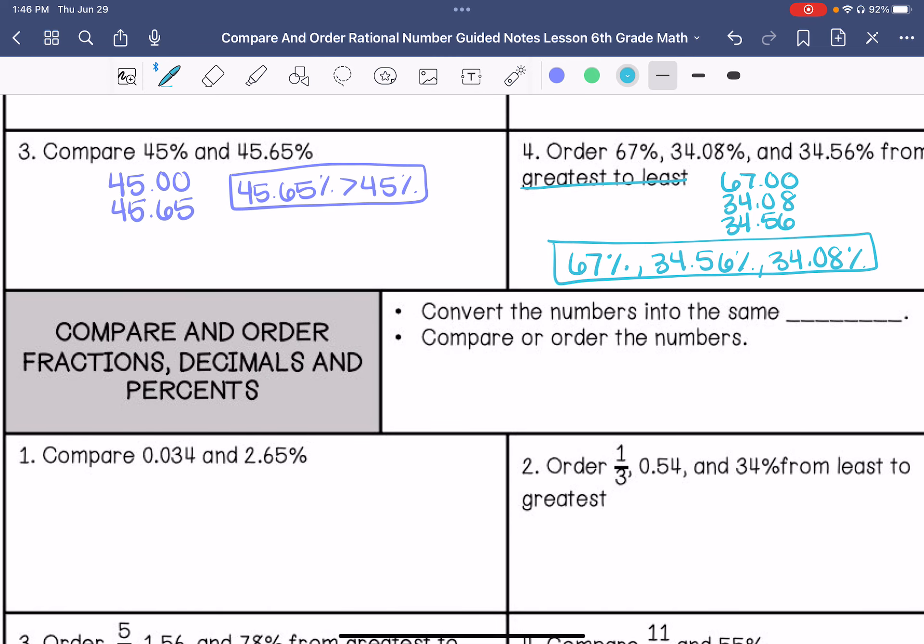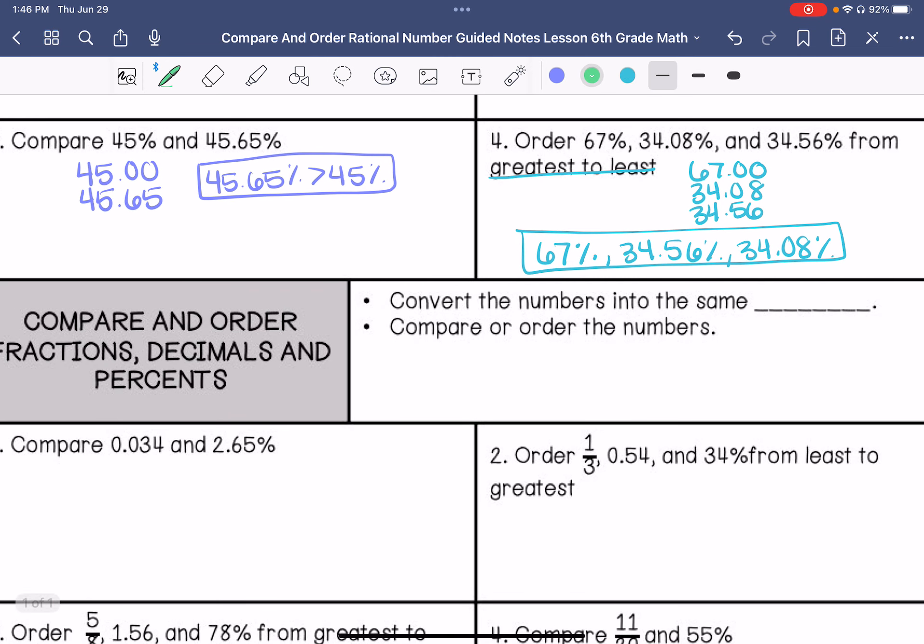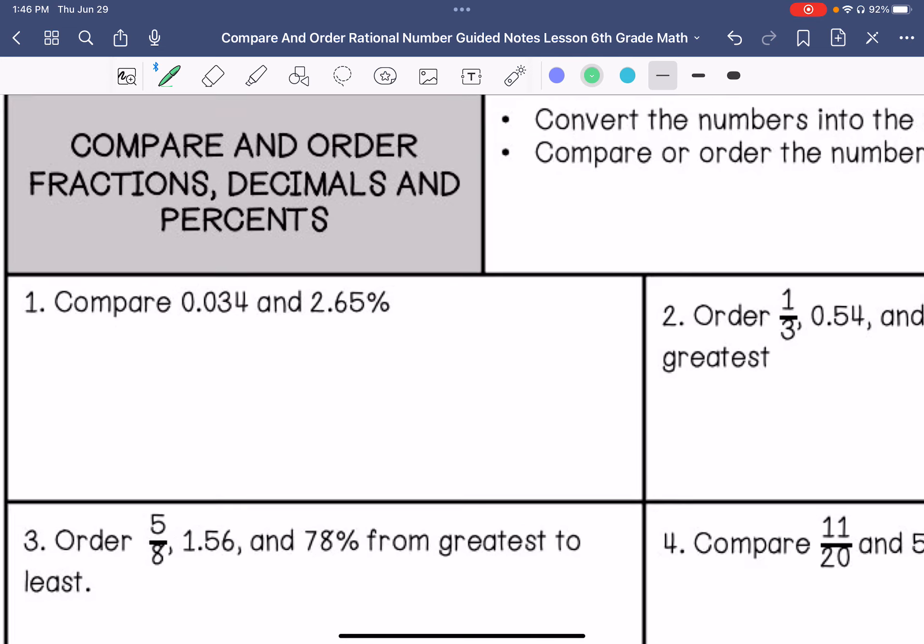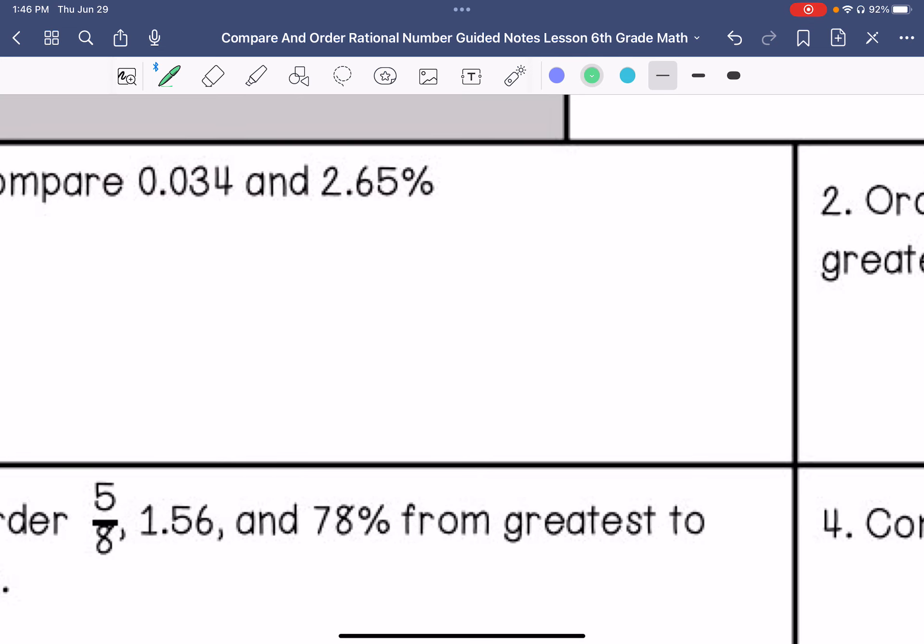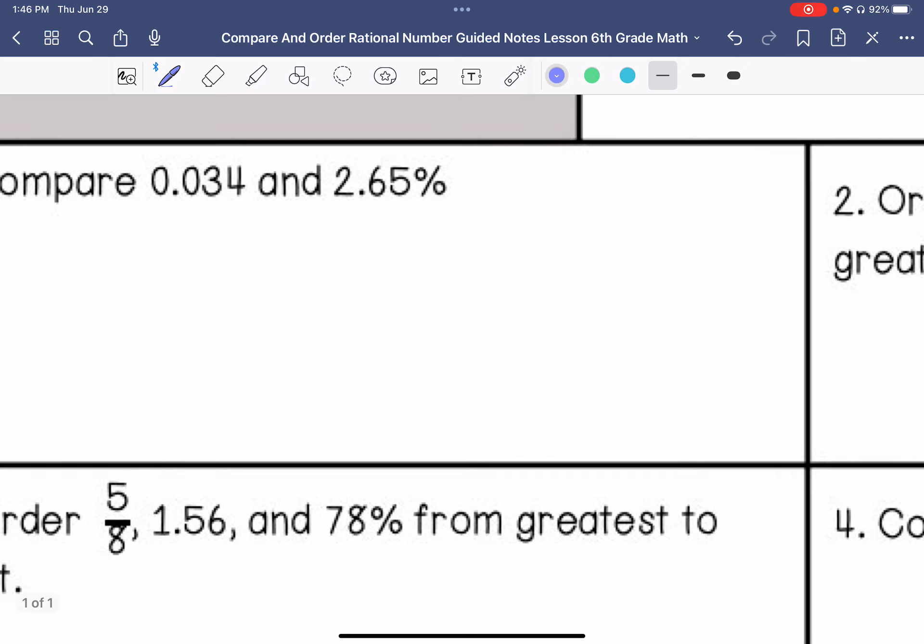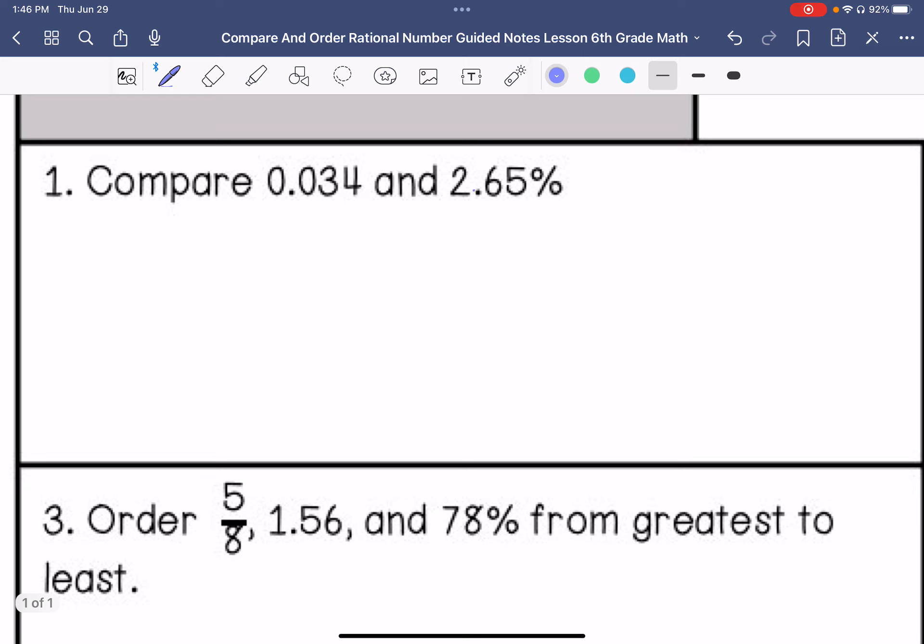If you are comparing all three, you convert them into the same form, and then you compare or order the numbers. So I'm going to put these both as a decimal. So I have 0.034, and then 0.0265. Comparing these, the three is greater than the two, so 0.034 is greater than 2.65%.